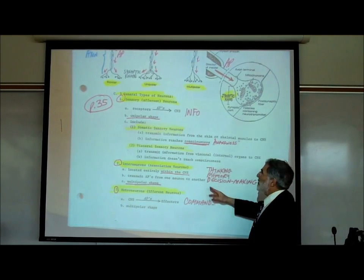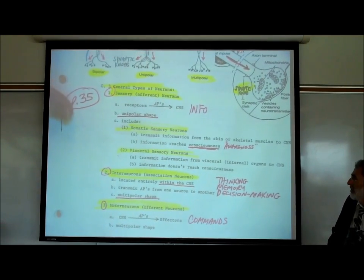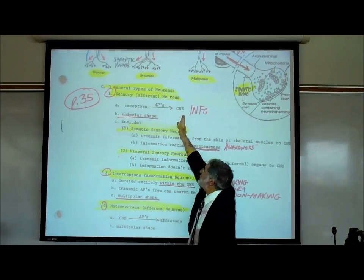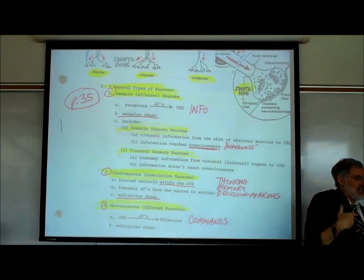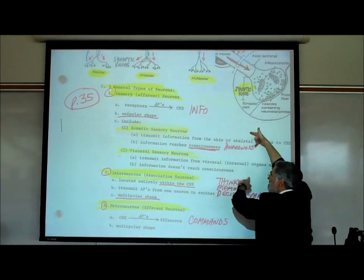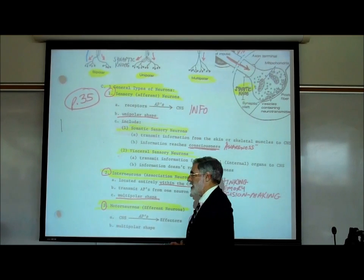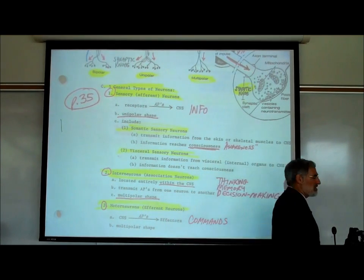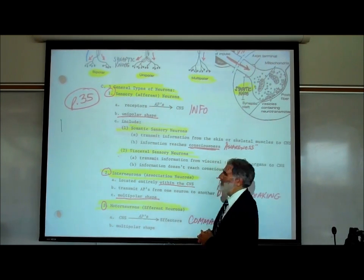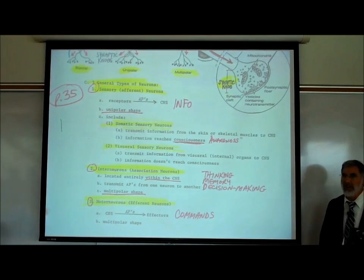There are three types of neurons functionally: sensory neurons, interneurons, and motor neurons. Sensory neurons conduct action potentials to the central nervous system — to the brain and spinal cord — providing information in. They usually have a unipolar shape. There are two types: somatic sensory neurons, which transmit information from the skin and skeletal muscles to the CNS where it reaches consciousness, and visceral sensory neurons, which transmit information from internal organs to the CNS, usually not reaching consciousness.